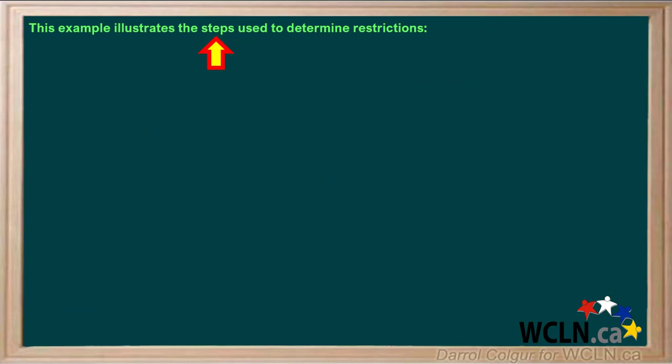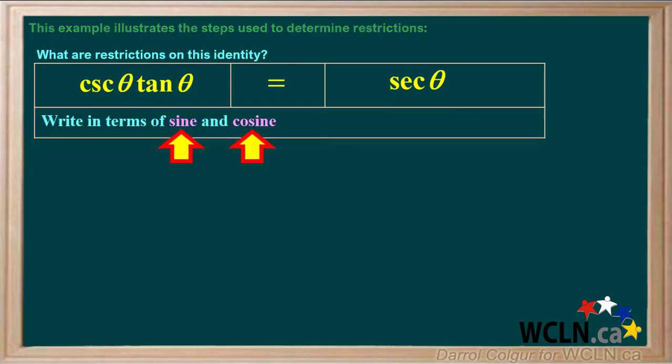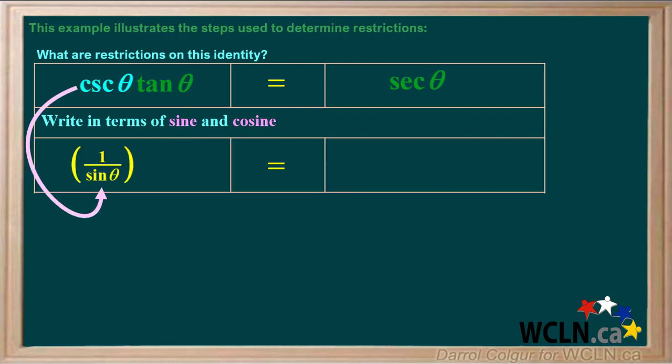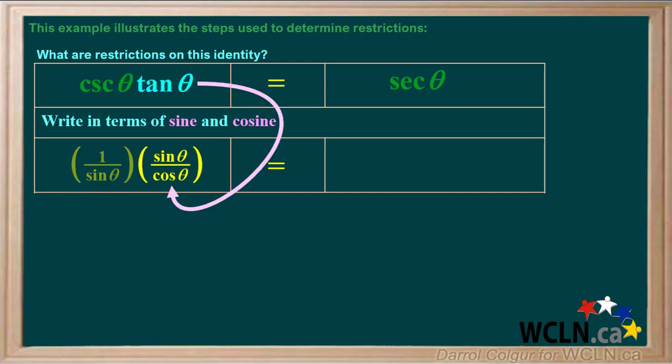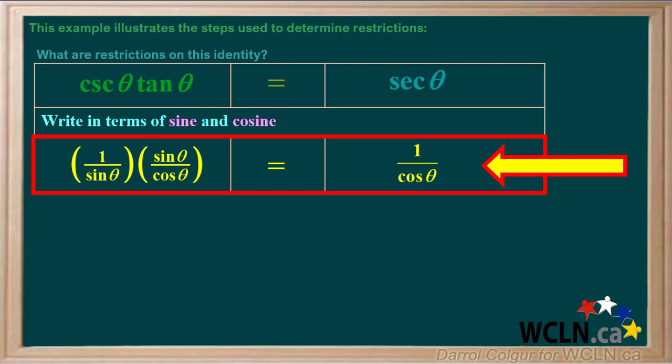The example we'll show you now illustrates the steps used to determine restrictions in a trigonometric identity or equation. We're asked for the restrictions on the identity cosecant theta times tan theta equals secant theta. We'll start by writing each ratio so it's in terms of only sine and cosine. Cosecant theta is the same as 1 over sine theta, tan theta is the same as sine theta over cosine theta, and secant theta is the same as 1 over cosine theta. So here is the same identity, only now it's written in terms of only sine and cosine.